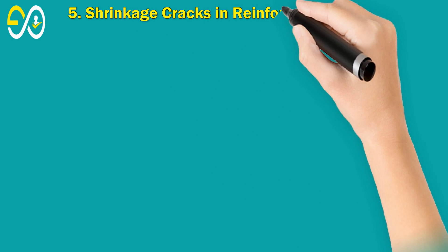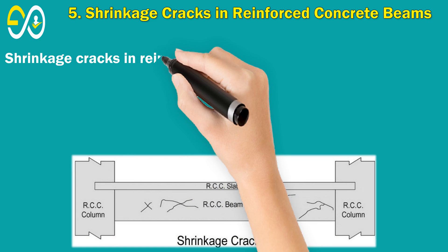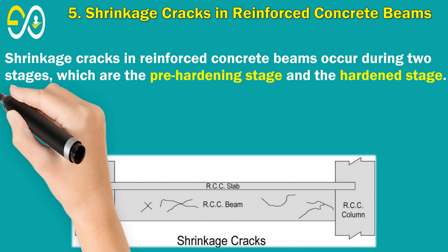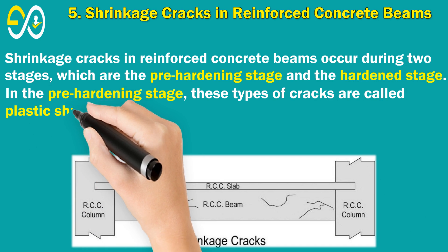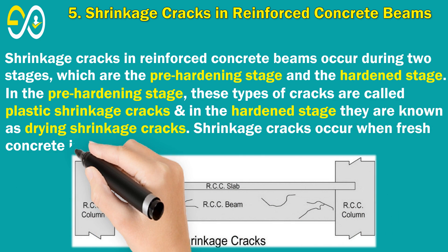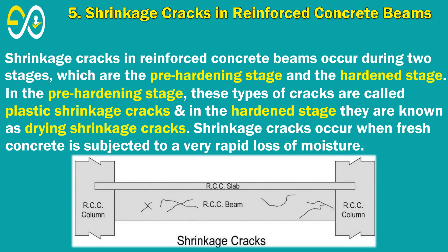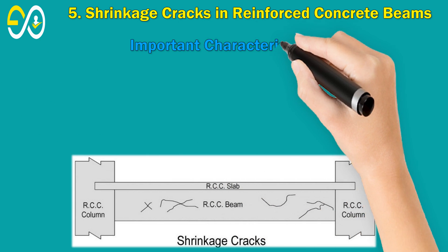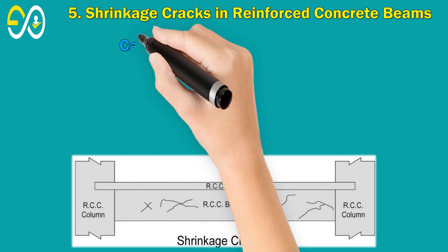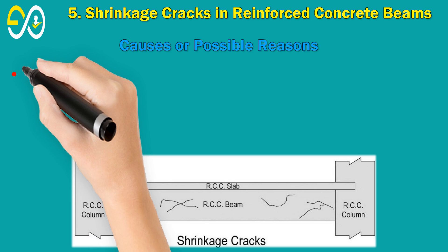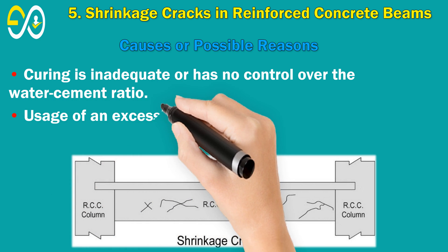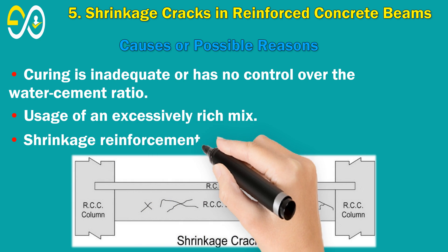5. Shrinkage Cracks in Reinforced Concrete Beams. Shrinkage cracks occur during two stages: the pre-hardening stage and the hardened stage. In the pre-hardening stage these are called plastic shrinkage cracks, and in the hardened stage they are known as drying shrinkage cracks. Shrinkage cracks occur when fresh concrete is subjected to a very rapid loss of moisture. Important Characteristics: No regular pattern or thickness, and in general superficial. Causes: Inadequate curing or no control over water-cement ratio; usage of an excessively rich mix; shrinkage reinforcement, if any, is insufficient.